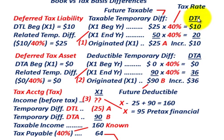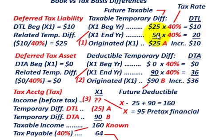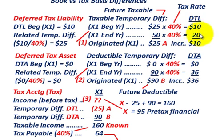Our deferred tax liability tax rate is 40%. We take 40% times the temporary difference of $25,000, giving us a deferred tax liability of $10,000 at the start of the year. At year end, 40% times $50,000 gives us a deferred tax liability of $20,000. So we have an increase of $10,000 for the year — starting with $10,000 and ending at $20,000.